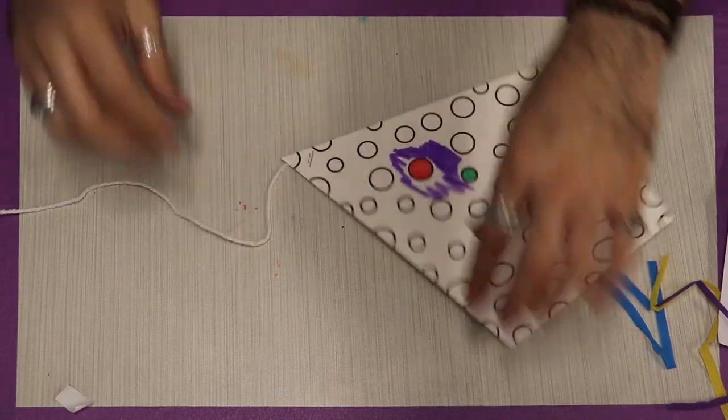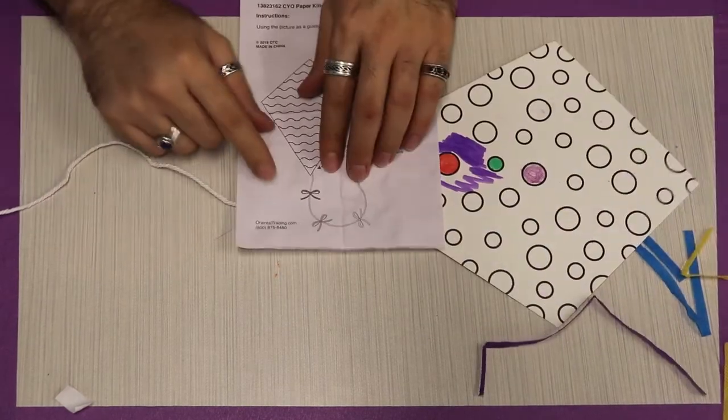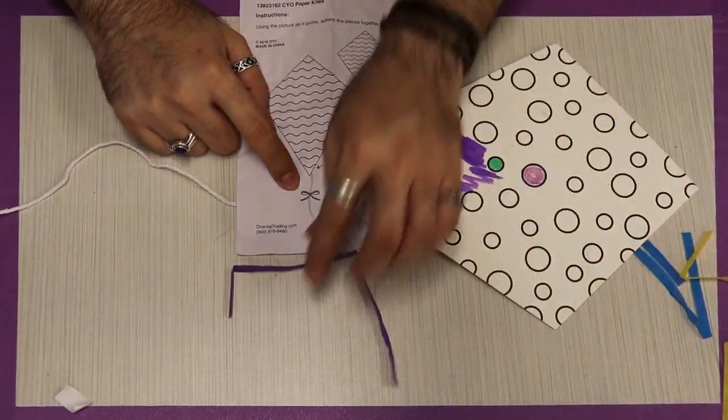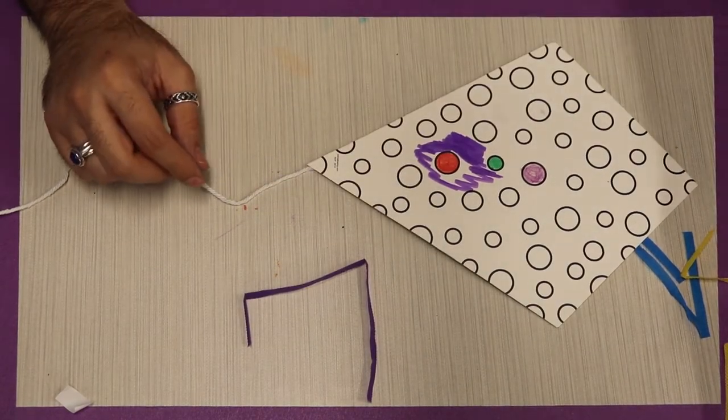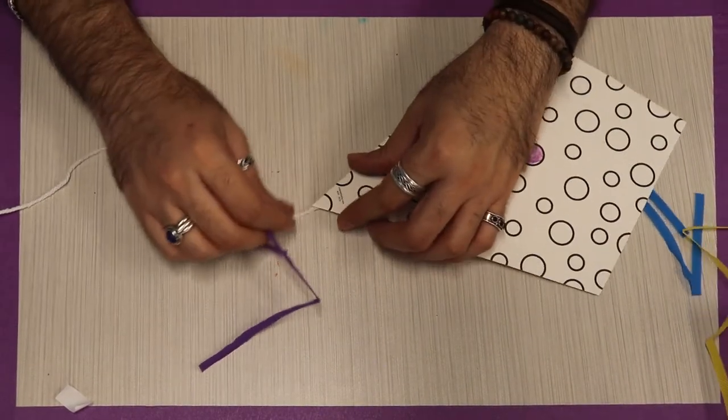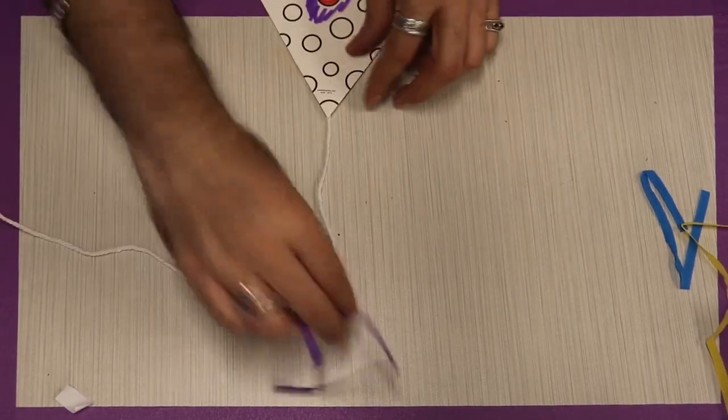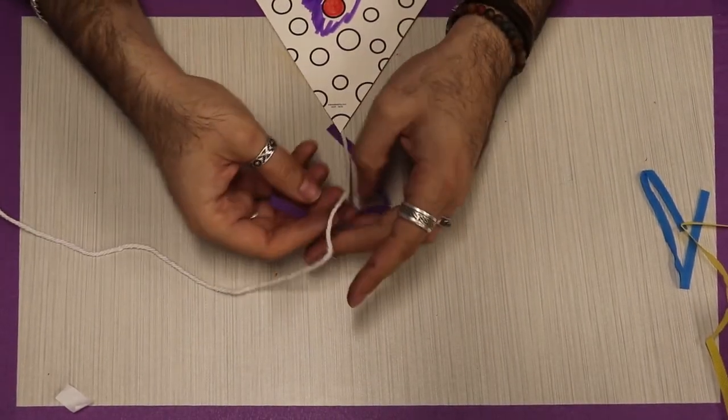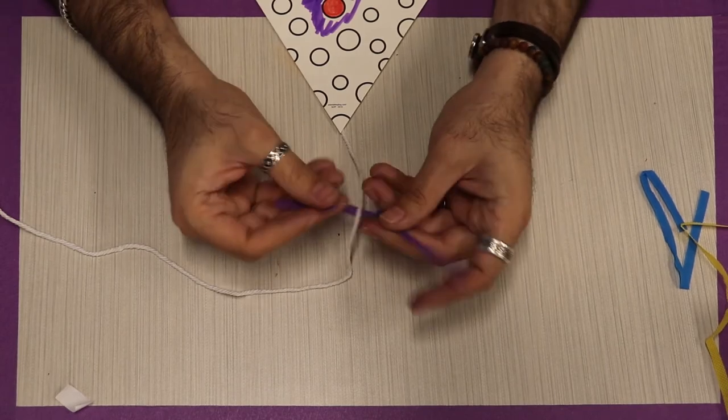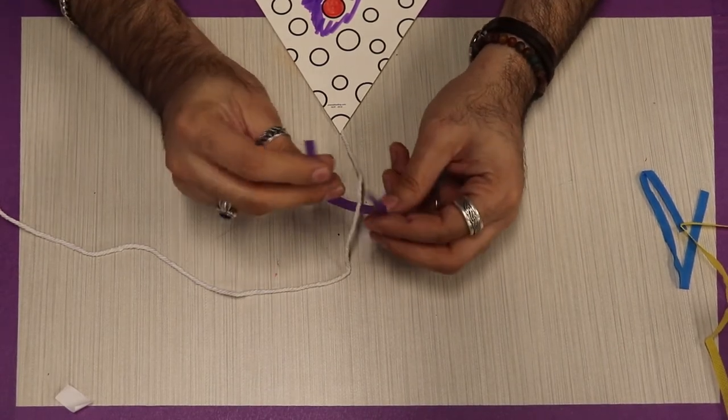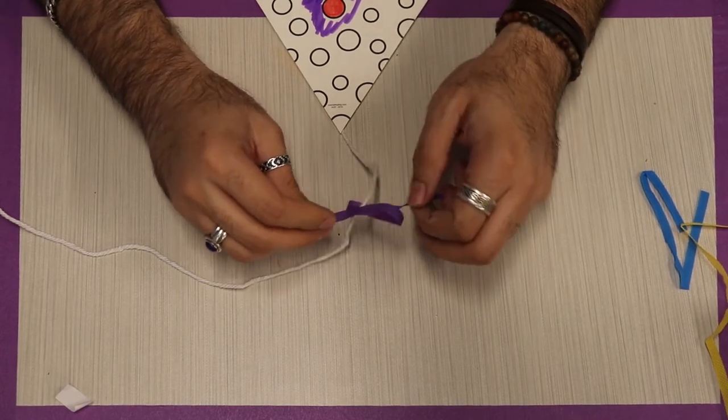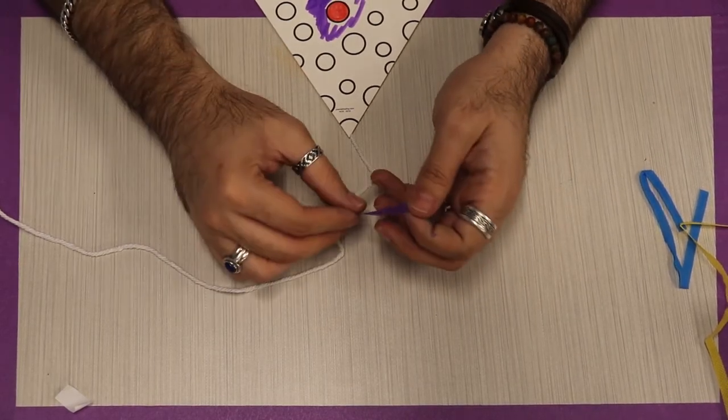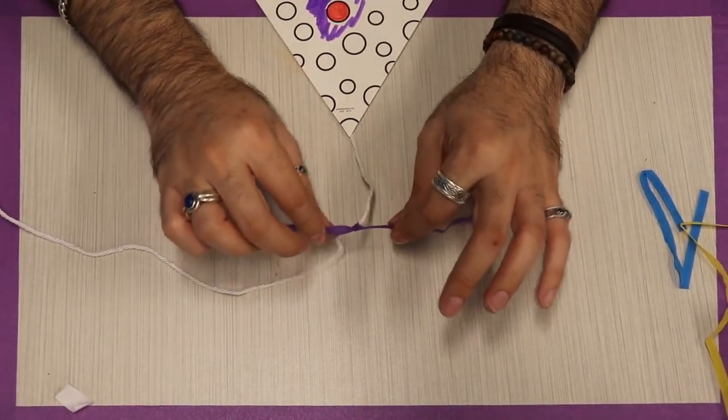Now if you notice in the instructions, we also got these extra pieces and we use these to make little bows on our kite. So I'm going to take my little bow, and this is just like tying your shoelaces. If you can't tie your shoelaces, that's okay too. You can have a parent, guardian, or sibling help you with this part. But you make a little knot.